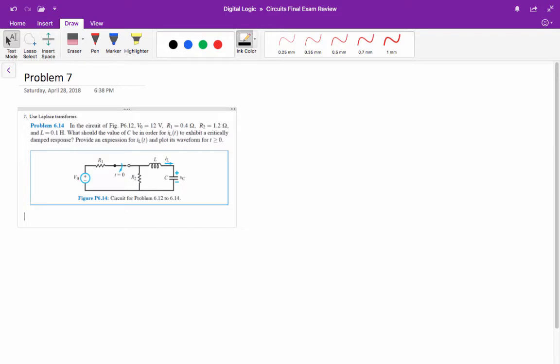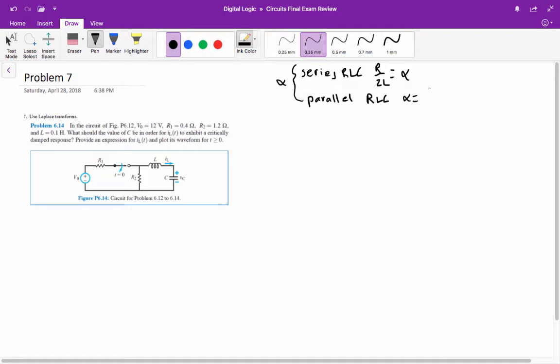We look at this variable called alpha, and alpha depends on whether it is a series RLC or a parallel RLC. For a series RLC, alpha equals R over 2L, and for a parallel RLC, alpha equals 1 over 2RC. We also have omega-naught, which is 1 over the square root of LC. Alpha is called the damping coefficient, and omega-naught is called the resonant frequency.